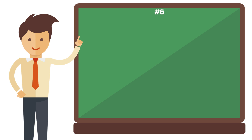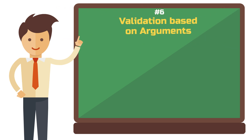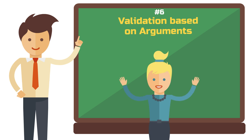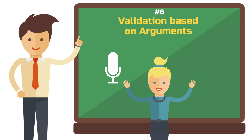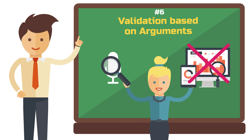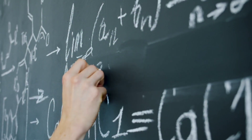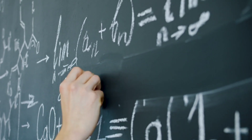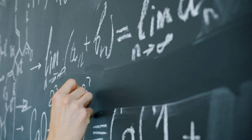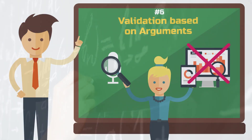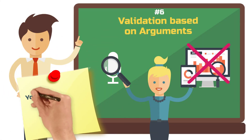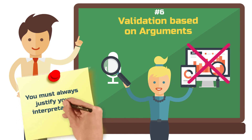Criterion number six: validation based on arguments. In qualitative research, you as the researching subject are required to interpret certain facts. It's not about achieving the most statistically generalizable and objective result. Unlike results from statistical tests in quantitative studies, your interpretations cannot be directly checked for accuracy. Nevertheless, there is a rule in qualitative research: you must not simply assert interpretations, but you must always justify them.